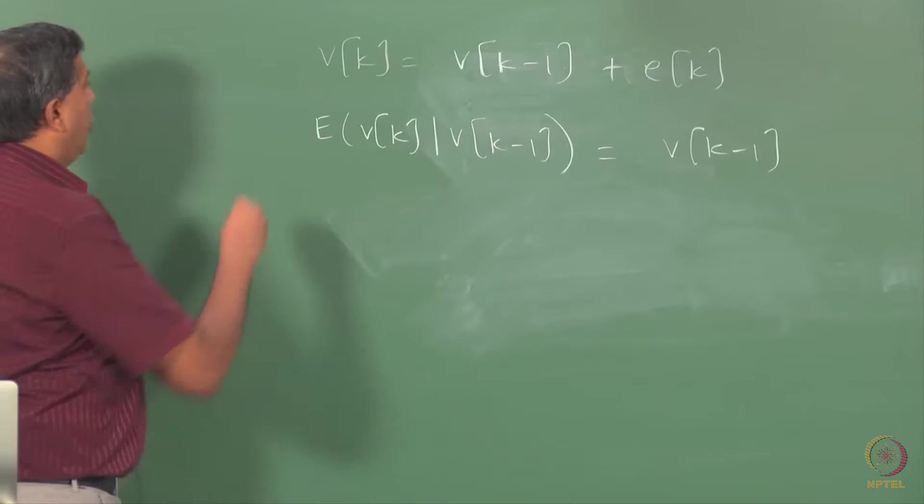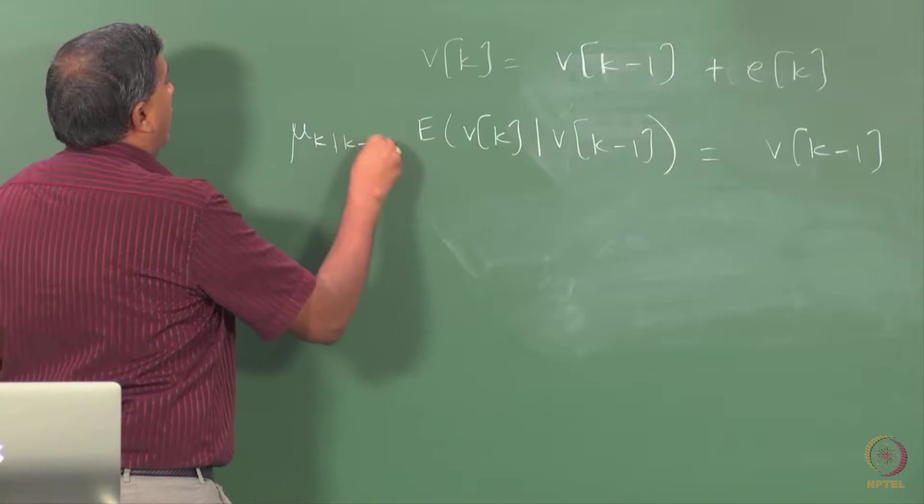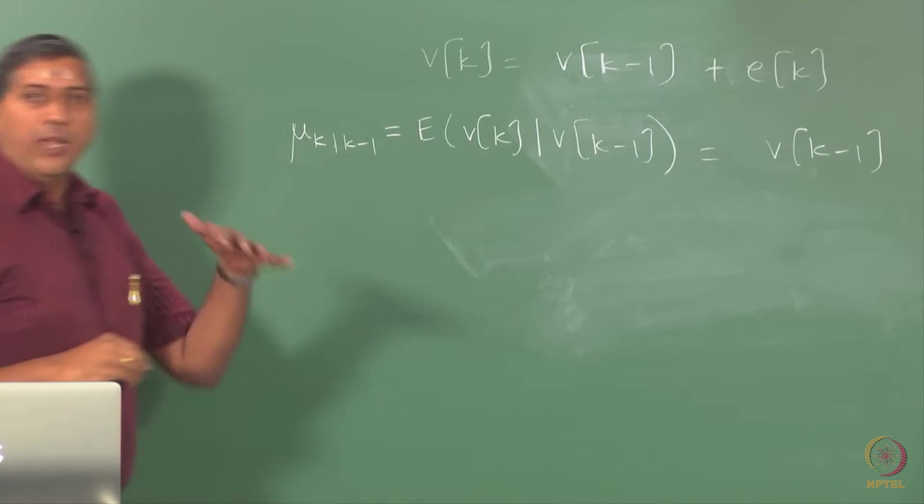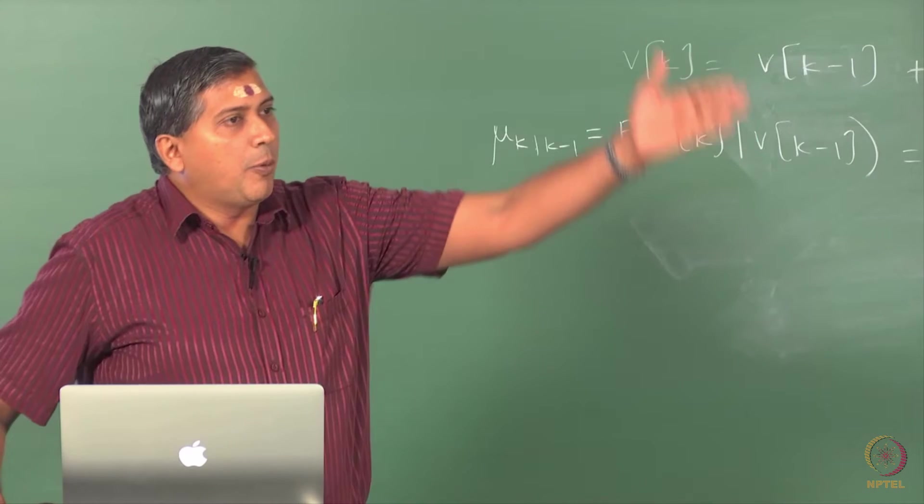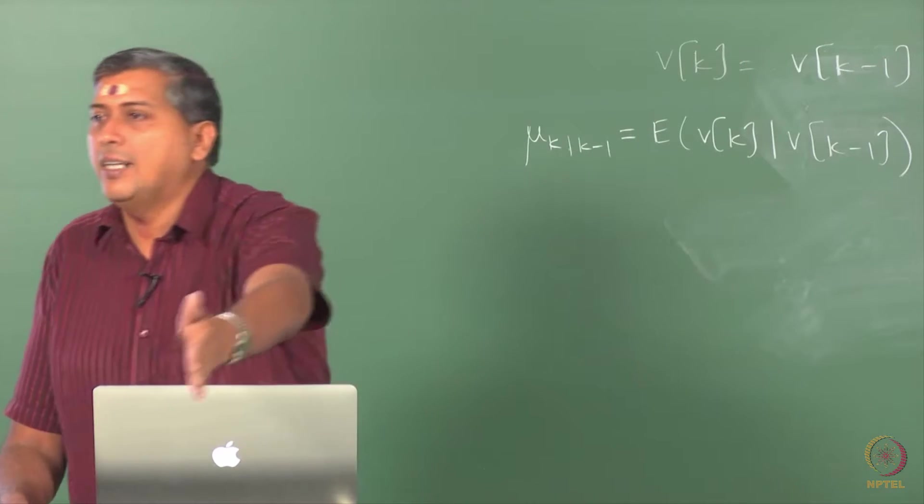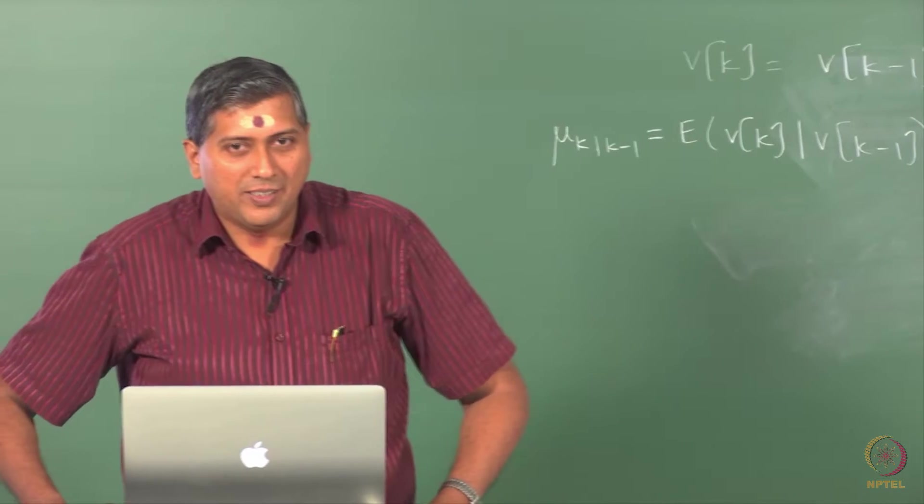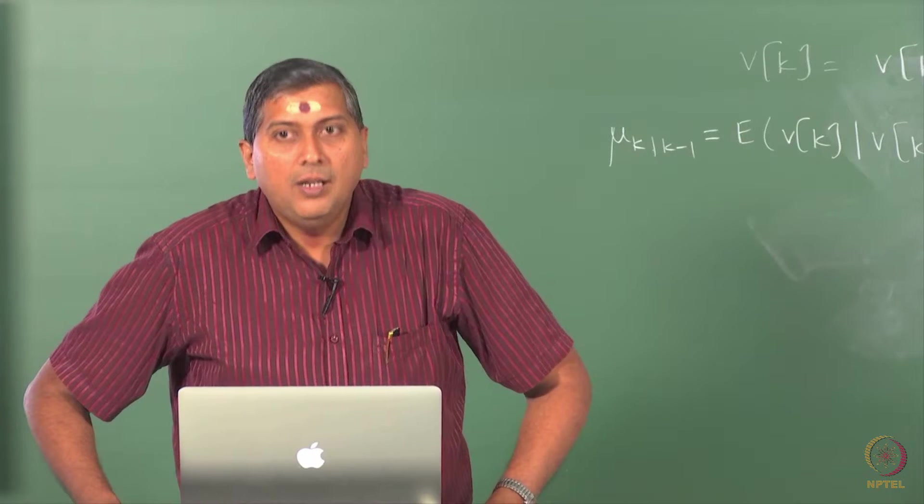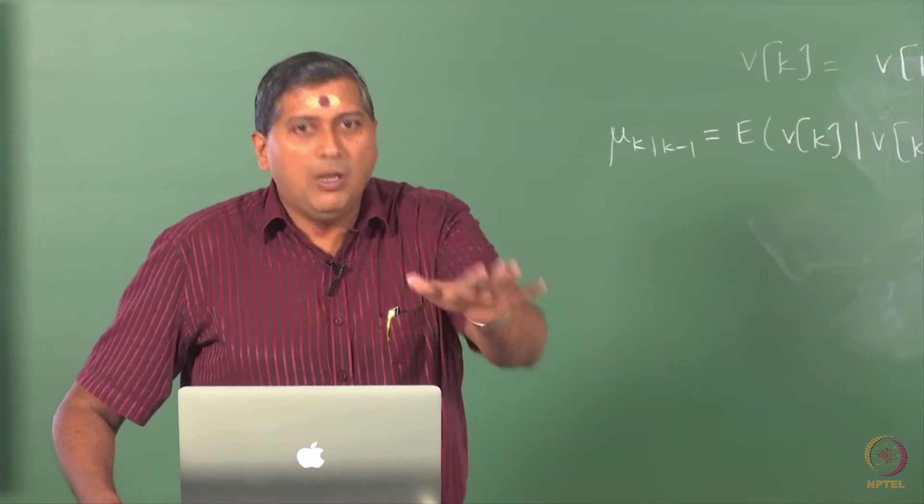But this is nothing but your mu at K given all the series up to K minus 1. This is a conditional mean. So given that the process has evolved up to this instant in this fashion, the mean at the next instant is the observation at the previous instance. So which means the mean is in some sense changing with time, but in a peculiar way.